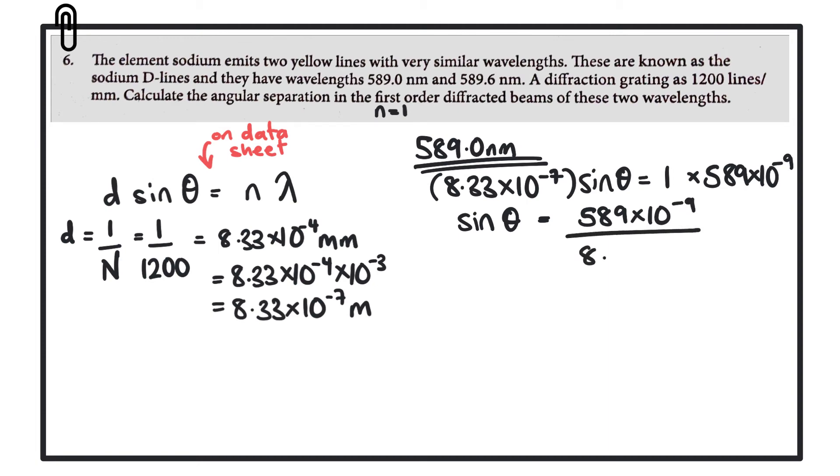But we want theta, so in order to get theta we need to take the inverse sine of that calculation, which is 589, that's the wavelength, divided by the grating element. When we put that into a calculator, we get 44.998 degrees.